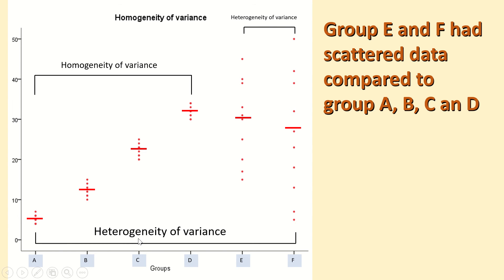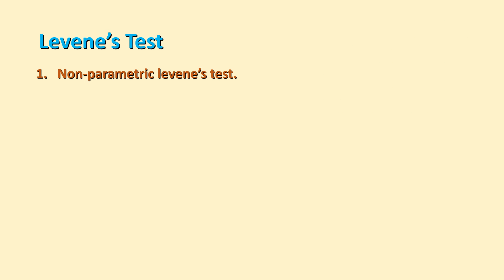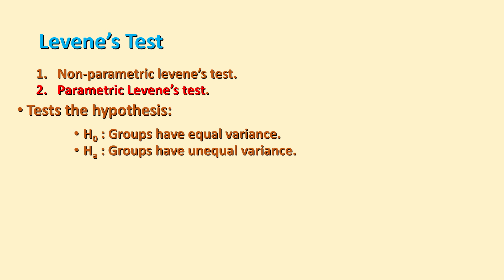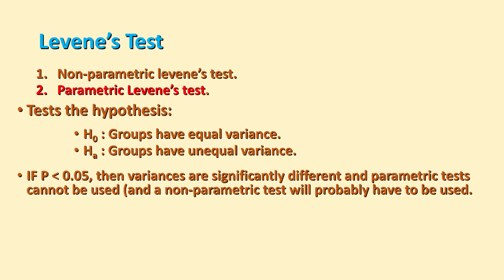There are two types of Levene's test: non-parametric and parametric. I will make a separate video clip for the non-parametric version. The parametric Levene's test tests the null hypothesis that the groups — whether two, three, or four — have equal or homogeneous variance. The alternative hypothesis is that the groups have heterogeneous variance. If the p-value is less than 0.05, we reject the null hypothesis, indicating variances are significantly different.